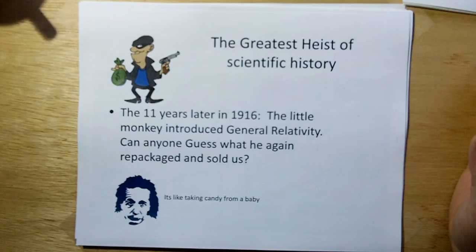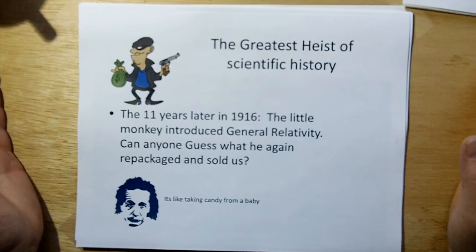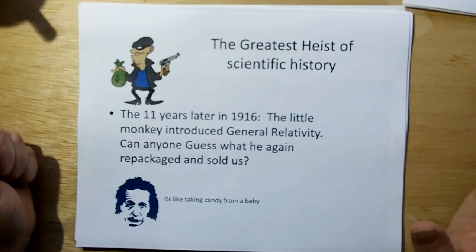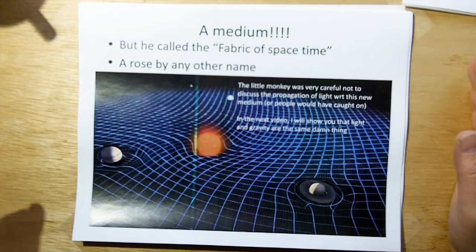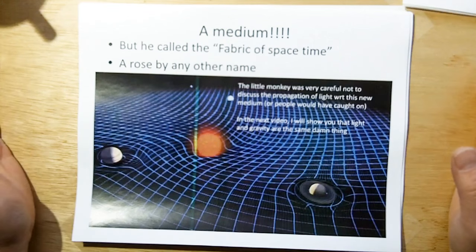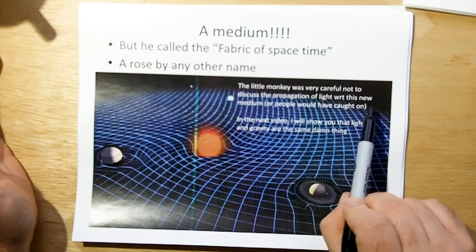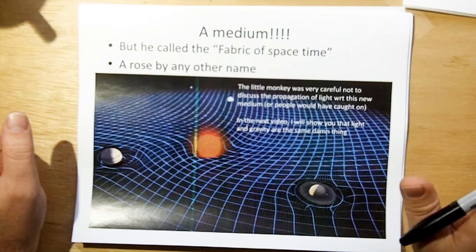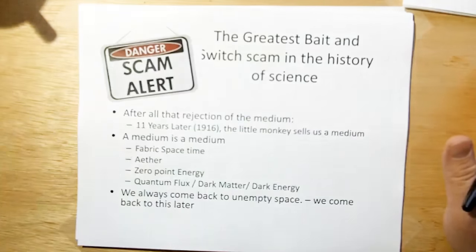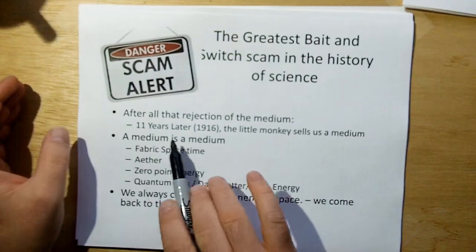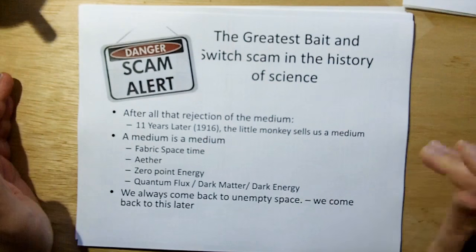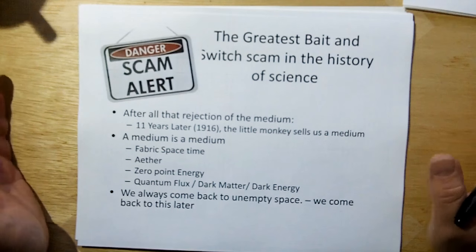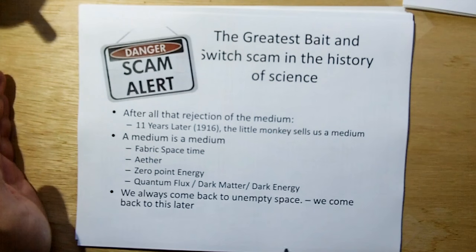Because of our gullibility, we accepted the irrelevance of the ether and totally rejected further discussion of it, thinking only stupid people would consider it. After all, relativity gets the right answers without considering the medium. But here's where the greatest heist continues: eleven years later, in 1916, the little monkey introduced general relativity. Can anyone guess what he repackaged and sold us again? A medium — but he called it the fabric of space-time. He was careful not to discuss the propagation of light with respect to this new medium; otherwise people would have caught on that he basically sold us another ether.